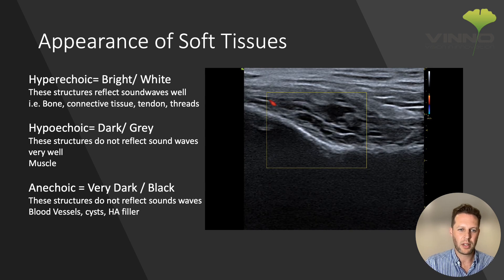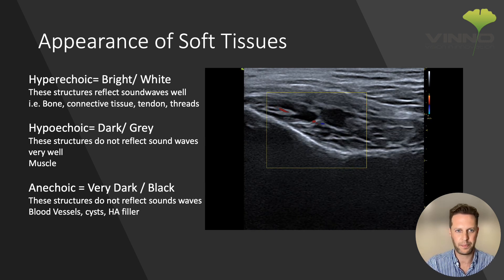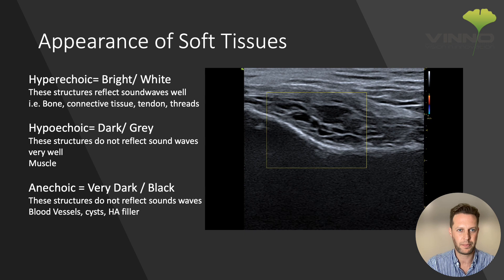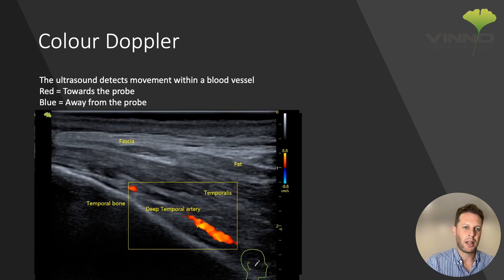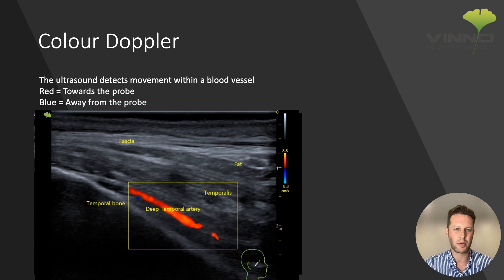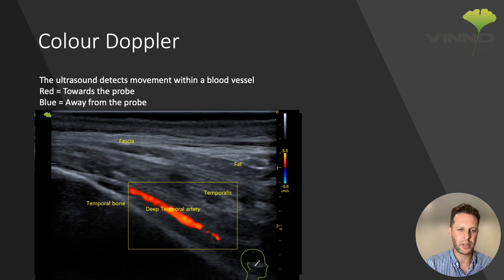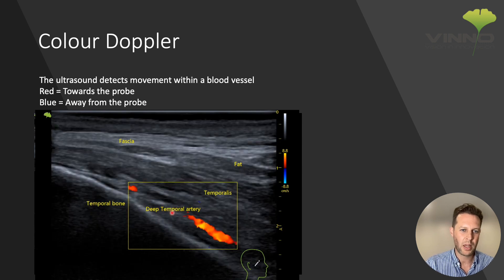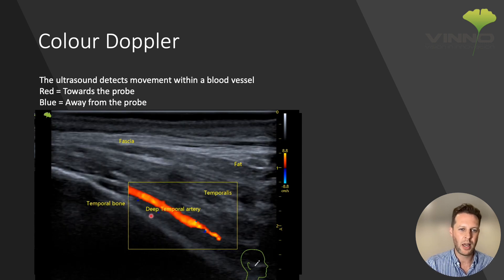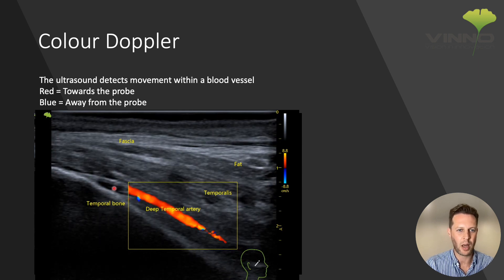The other thing we can see in this video is some colour. Colour Doppler is basically a mode on ultrasound which detects movement, so it's really useful for aesthetic imaging because it's able to pick up blood flowing in arteries and veins. Looking at the same image, we can see the deep temporal artery just above the bone. When you put colour Doppler on, you'll see all of the colour flow within the yellow sampling box.